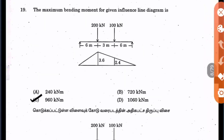Question 19: The maximum bending moment for the given influence line diagram is what? They have given a beam-like structure with two loads and drawn the diagram. We directly multiply the loads with the ordinates: 200 into 3.6 plus 100 into 2.4, giving 720 plus 240, which equals 960. Option C.